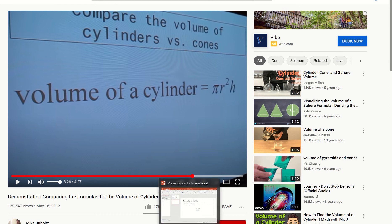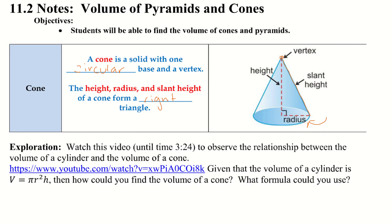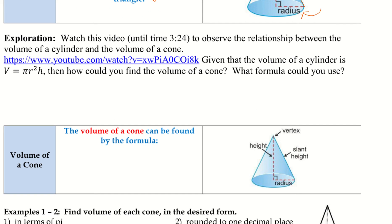Alright, let's go ahead and go back to our notes now. So, we want, given that the volume of a cylinder is volume equals pi r squared times h, then how could you find the volume of a cone? What formula could you use? So, if we think about that video we just watched, we were able to fill three cones for every one cylinder.